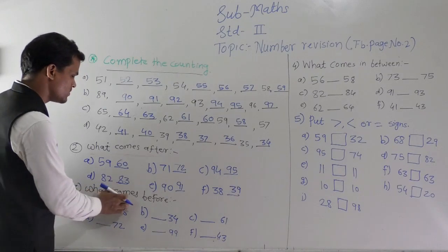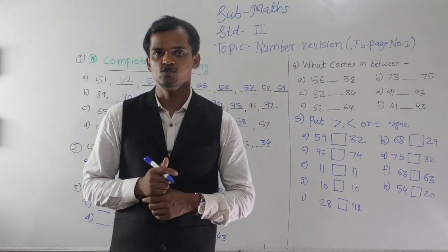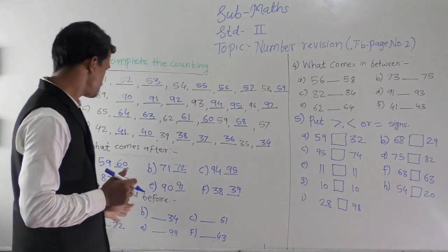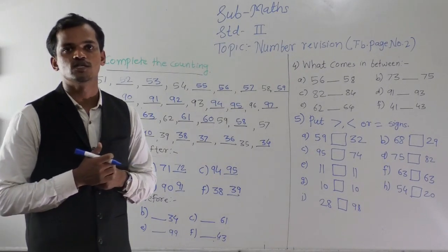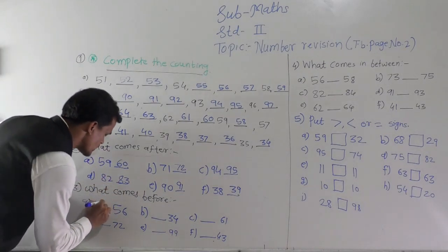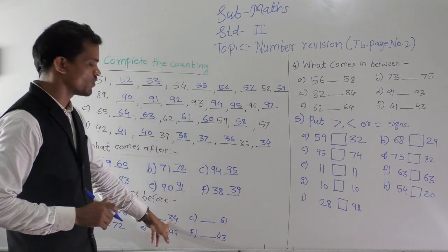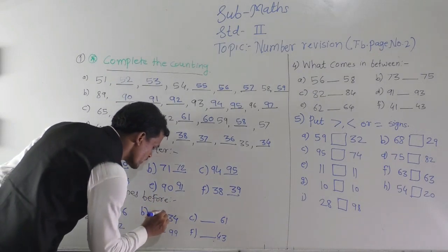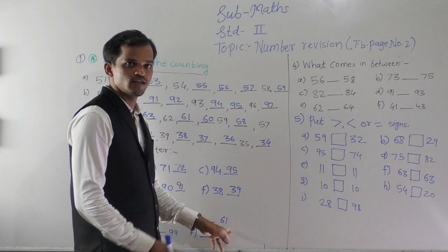Then, what comes before? Before number means one less than the given number. See here: first, 56 — one less than 56, which number? That is 55. So write here 55, 56. Then 34 — one less than 34 is 33, so write 33 here. Then 61 — before 61 is 60.